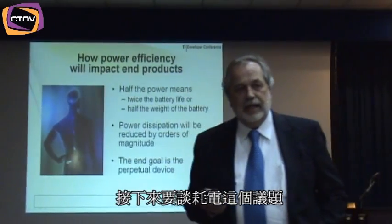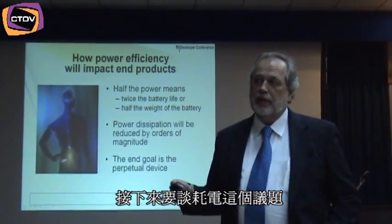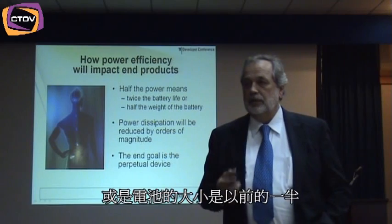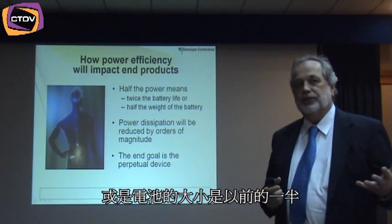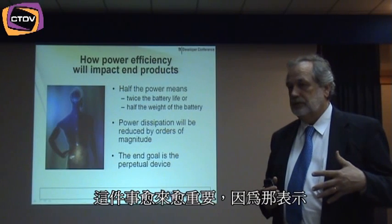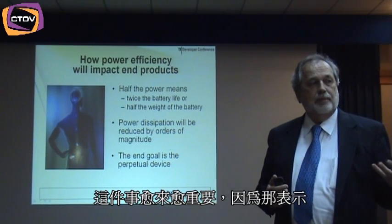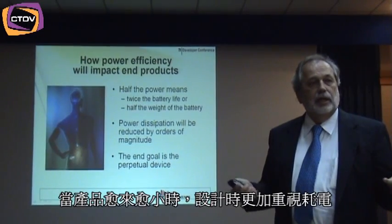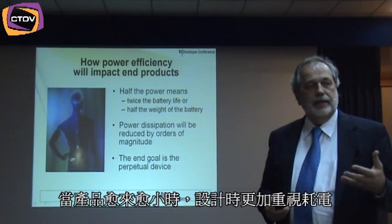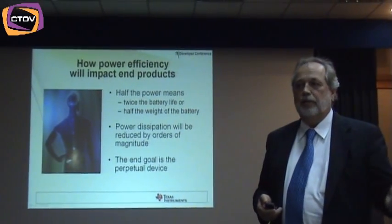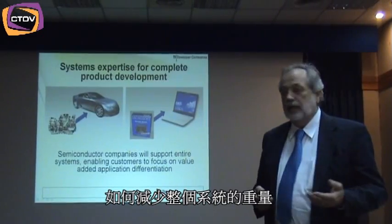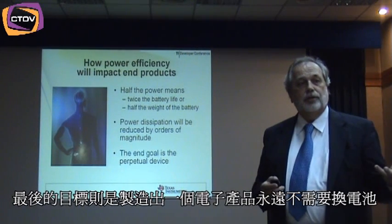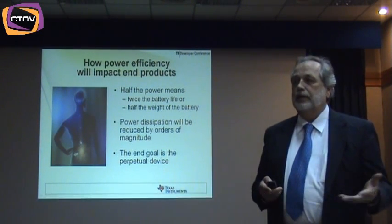Let's look at power consumption. As we begin to lower power consumption, it's obvious that if I lower the consumption of power in half, I can either have twice the battery life or a battery half the size. That becomes important as I begin to take things that I see on desks and put them in my pocket — and perhaps weave them into my clothing or make them a part of me. As we go more and more personal, the goal is to lengthen battery life and reduce the weight and size of the system. The end goal is the perpetual device, where I don't have to worry about power ever again.